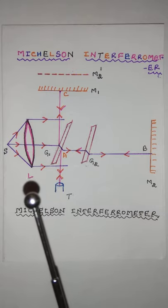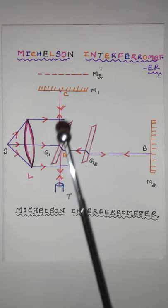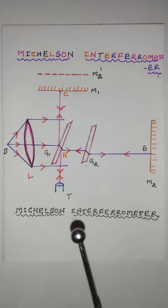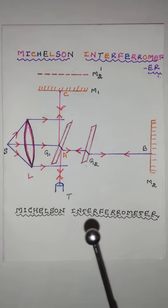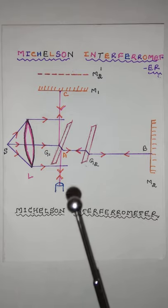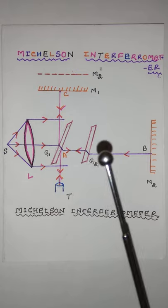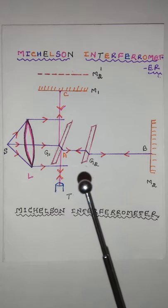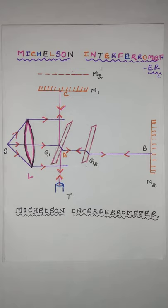Whenever a beam is incident on G1, it is partly reflected and partly transmitted. G1 is inclined at an angle 45 degrees to the incident beam. G2 is a compensating plate and S is the light source.